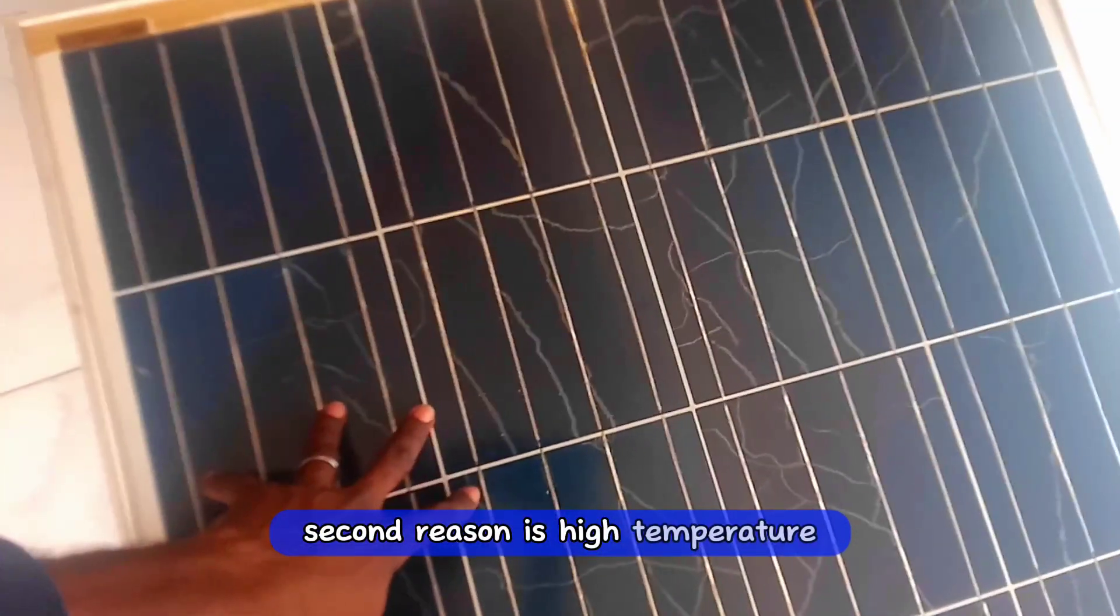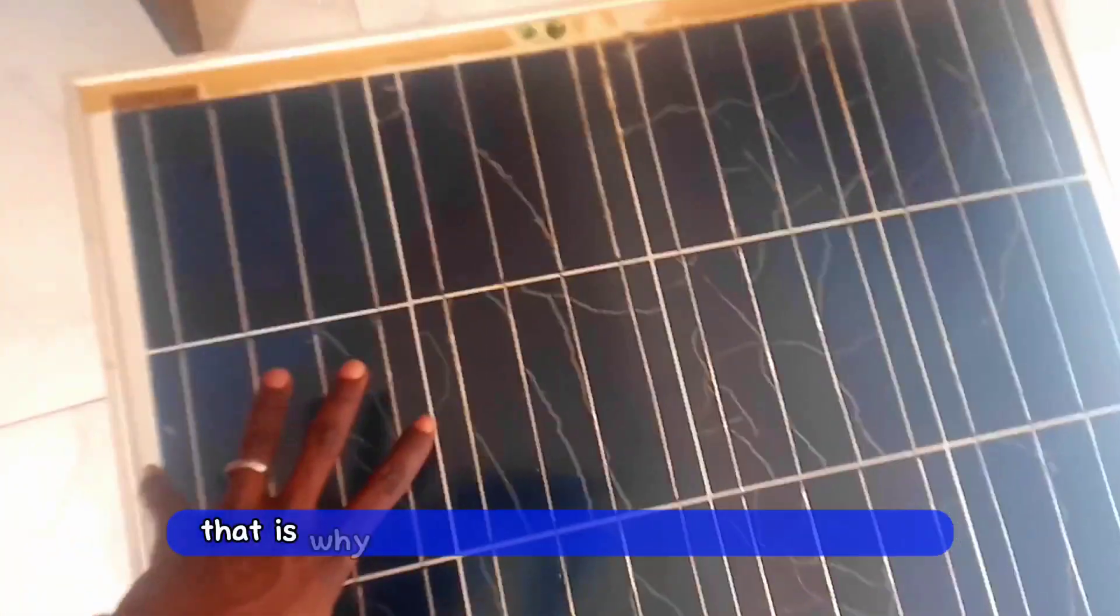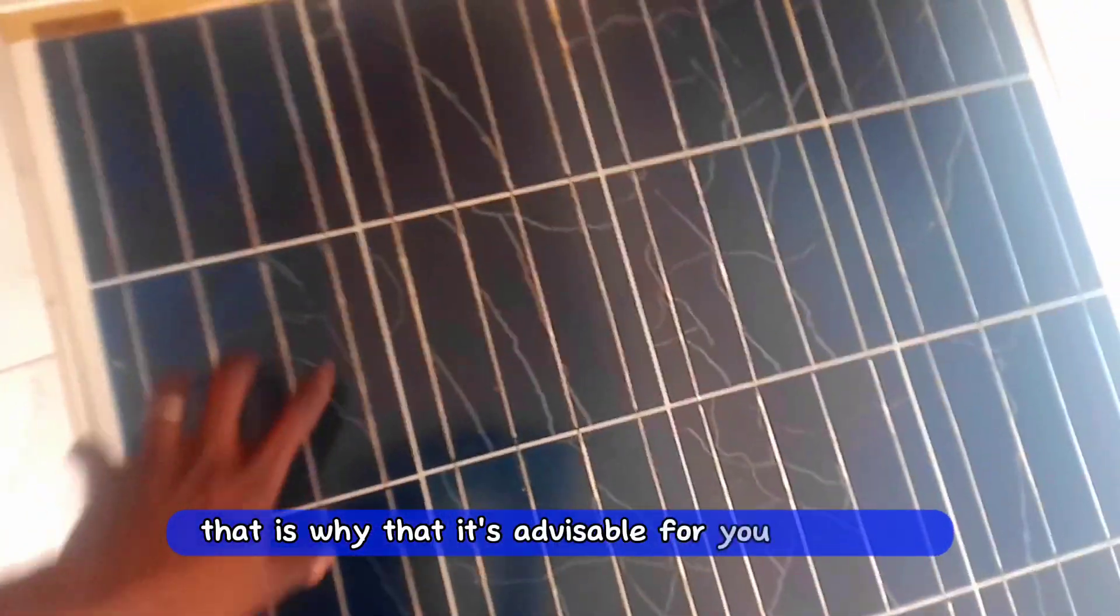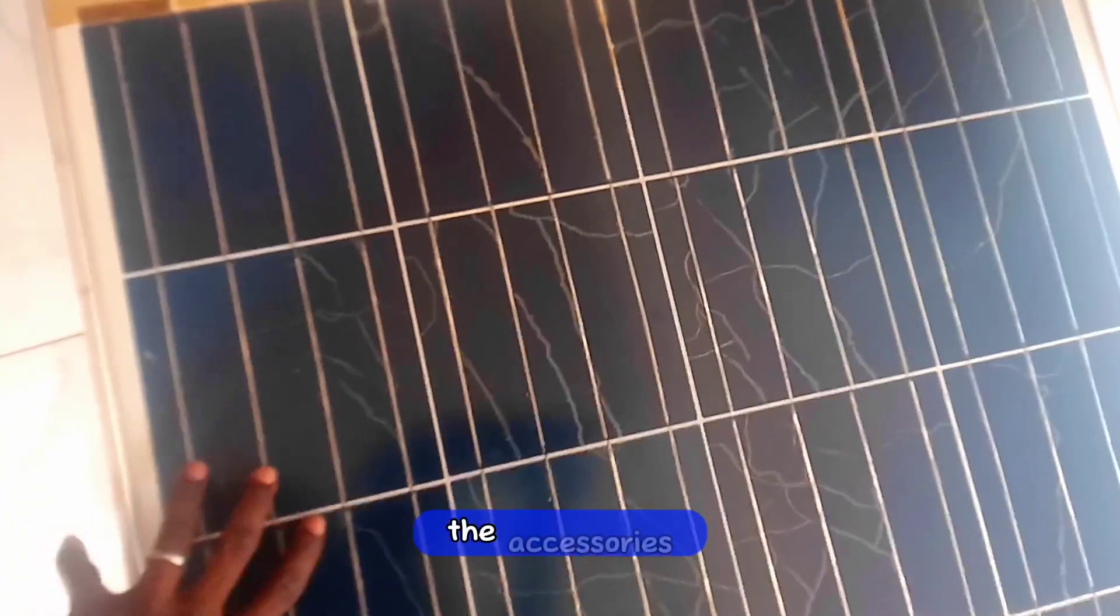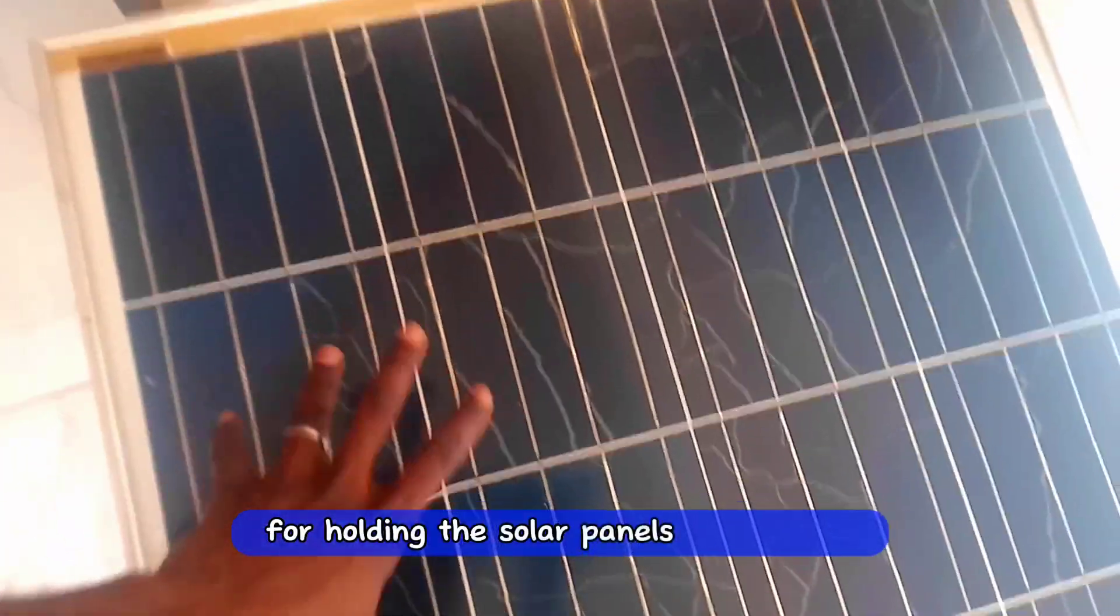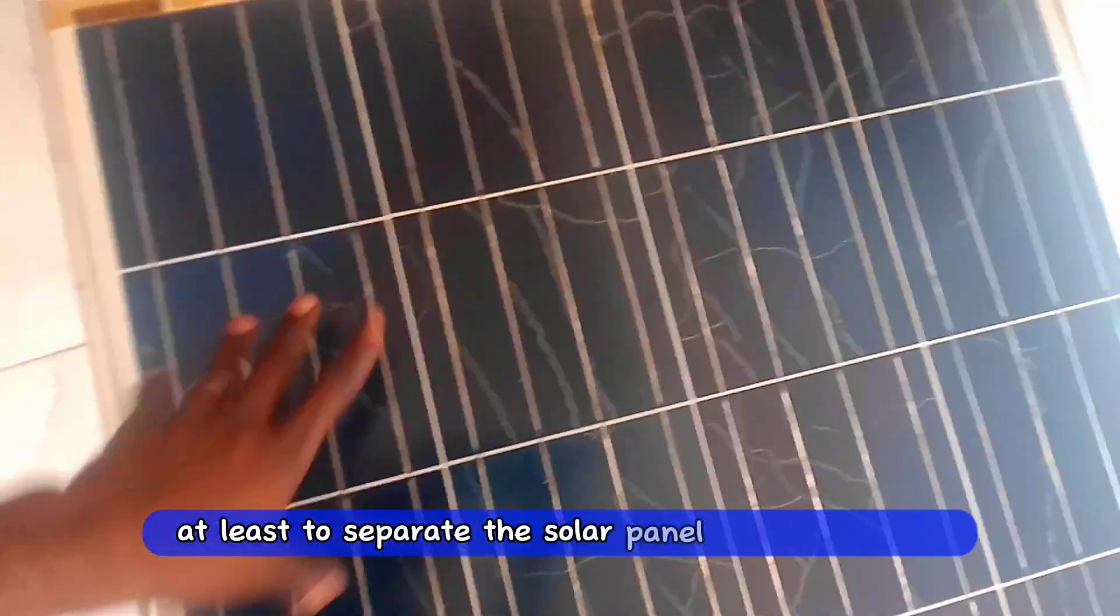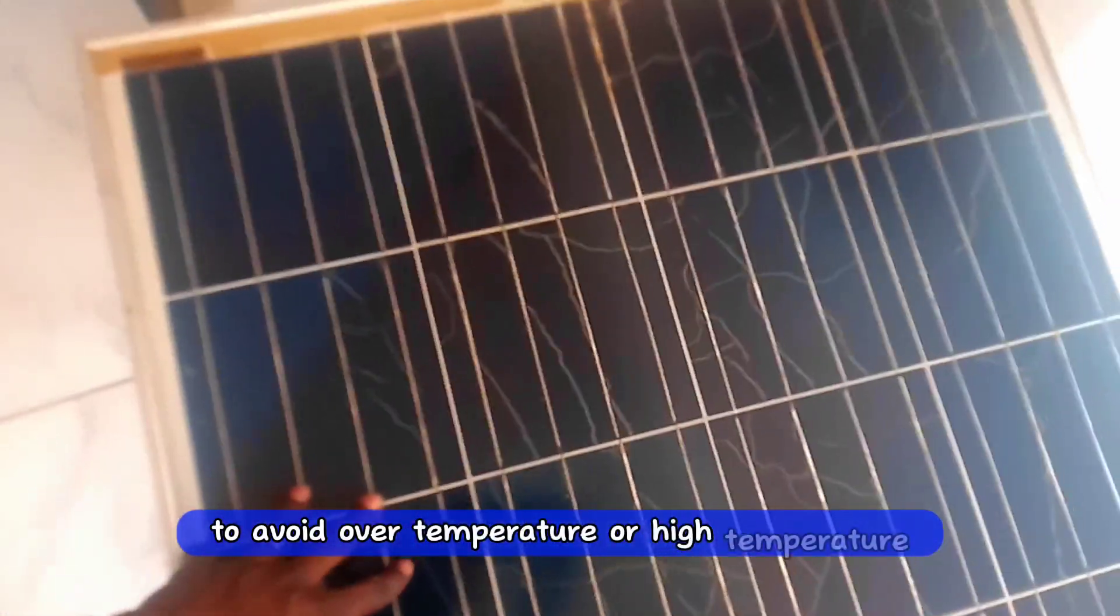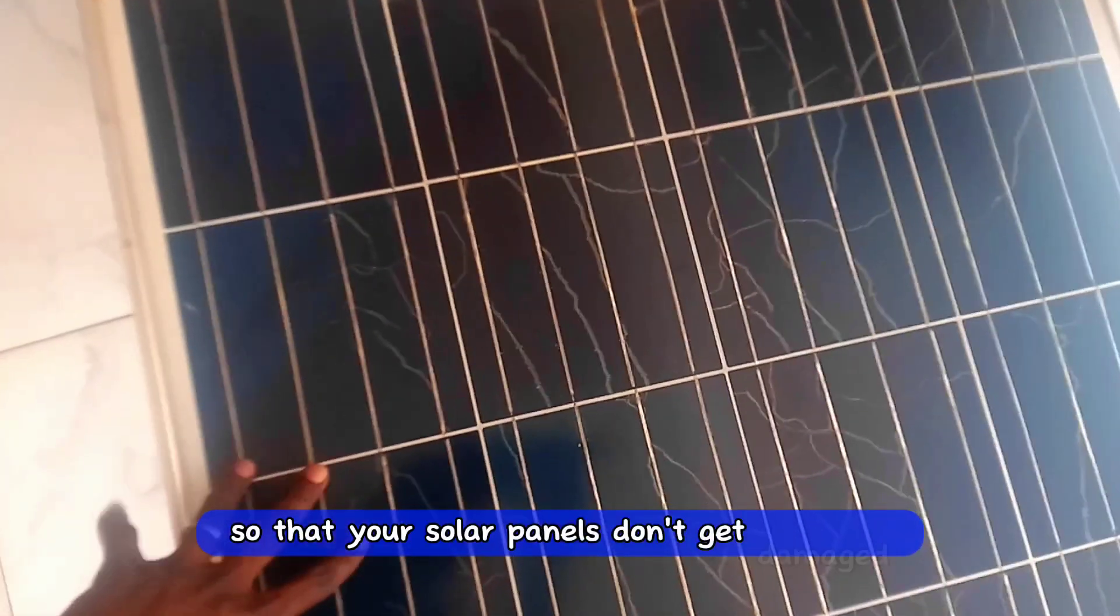A second reason is high temperature. That is why it's advisable for you to get the accessories for holding the solar panels on the roof, at least to separate the solar panel from your roof to avoid high temperature so that solar panels don't get damaged.